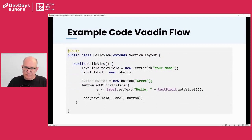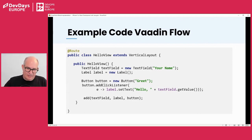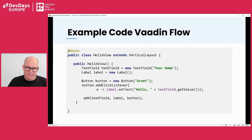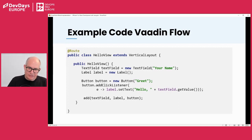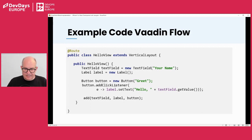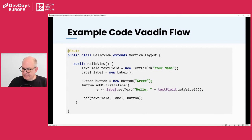Here is a HelloView code example. It has just one annotation — Route — which means it produces a website accessible by URL. The route derives the URL from the class name, so HelloView becomes 'hello'. In the constructor, you do something like desktop application development: you create a text field, a label, a button with a click listener, and then add them all to a vertical layout — a component for laying out your application.